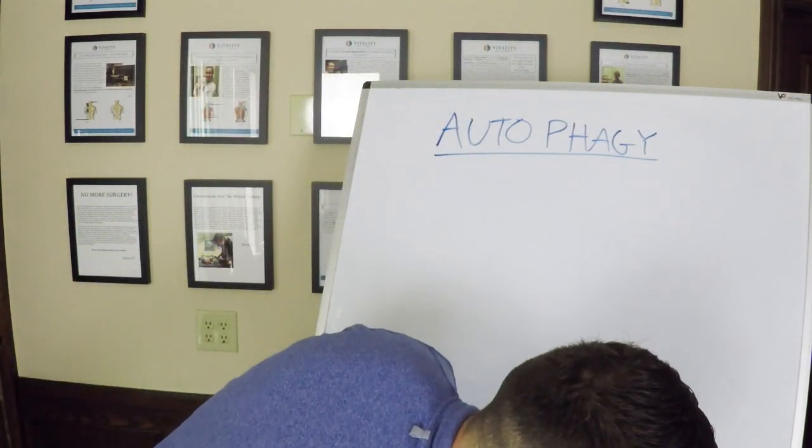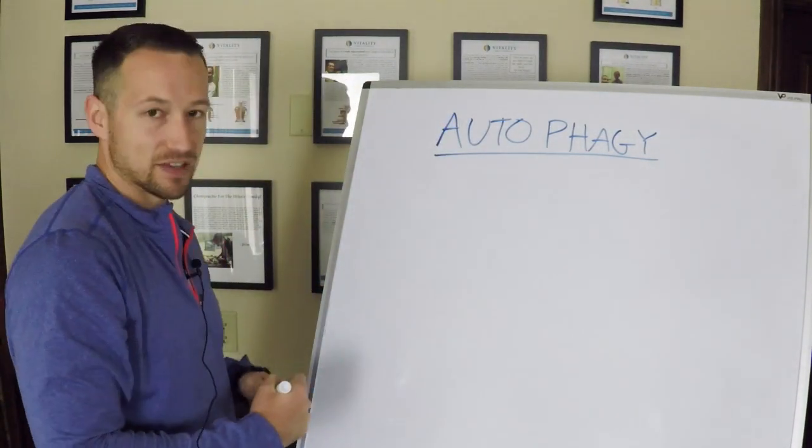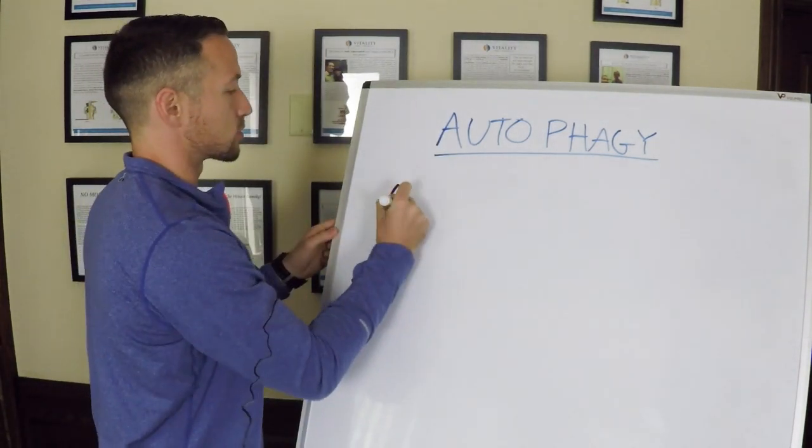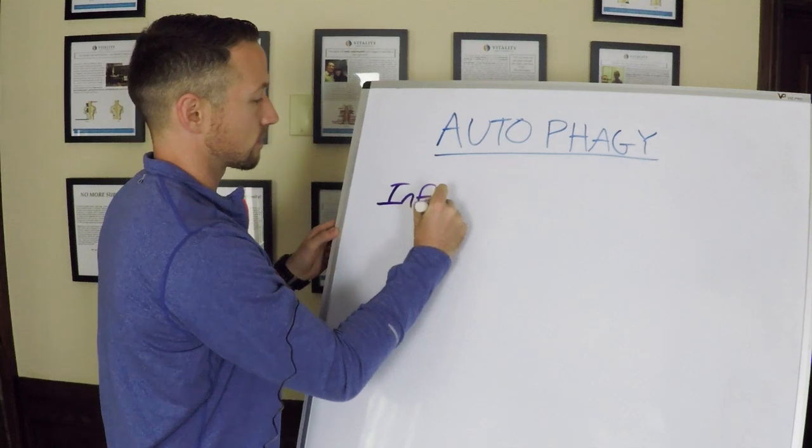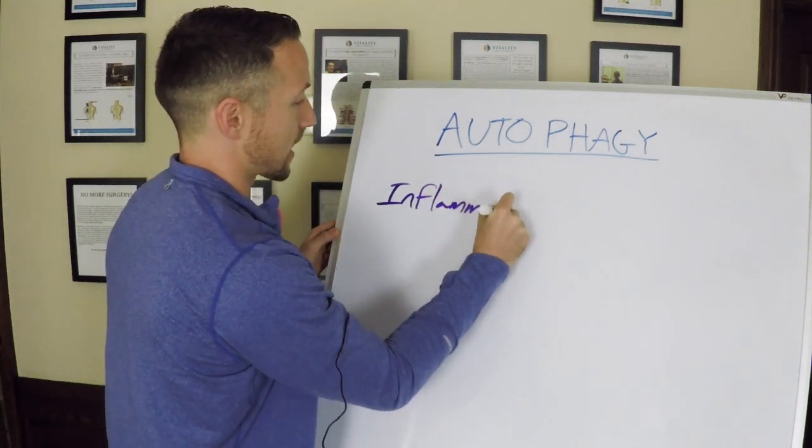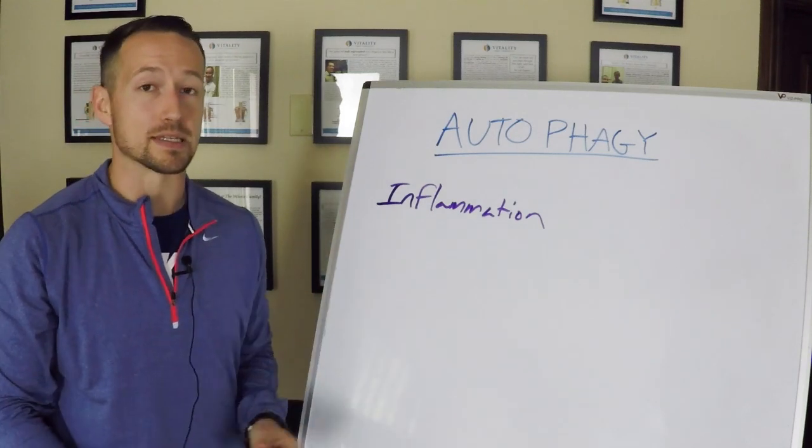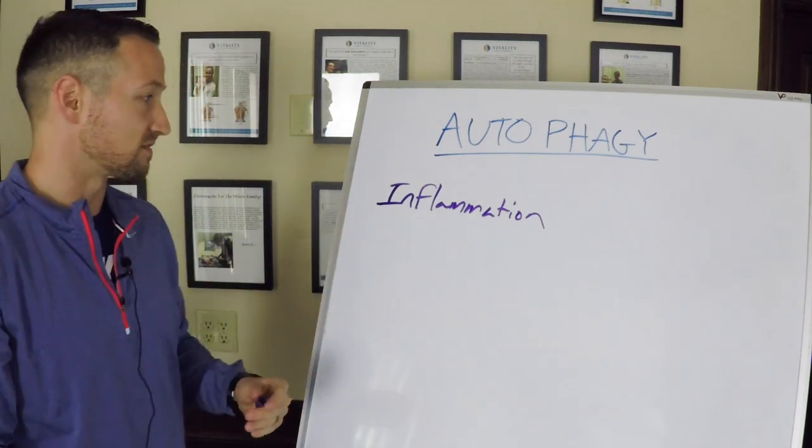And so autophagy is a really powerful way for our body to start to access this cleansing, detoxification system. And this is a really powerful way for your body to reduce inflammation. Let's take a look here. So one of the biggest things you'll see is reduced inflammation from this.